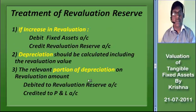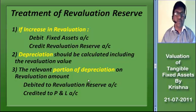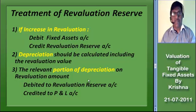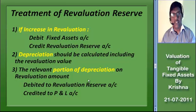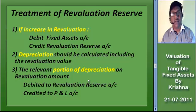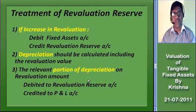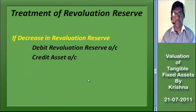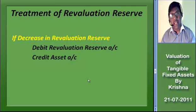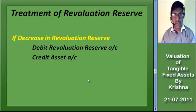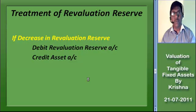Now we shall understand the accounting treatment for revaluation reserve. If the value of the asset is increased by way of revaluation, we have to debit the asset to the extent of the increment and credit the revaluation reserve. The depreciation for the asset should be calculated on the revalued asset value. The portion of depreciation on the revalued amount should be transferred to the profit and loss account by crediting profit and loss and debiting the revaluation reserve. After a revaluation increase, if there is any decrease in the particular asset by revaluation during that year, this decrease should be debited to the revaluation reserve and credited to the asset account.